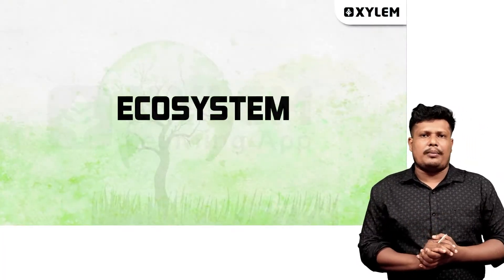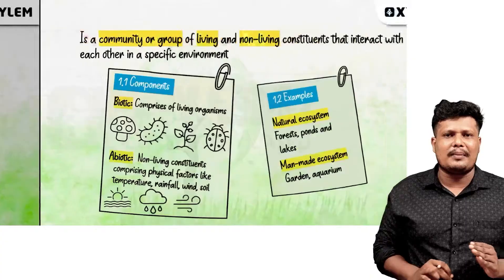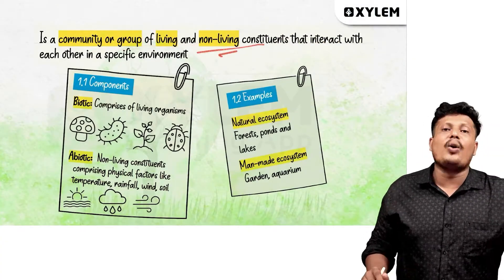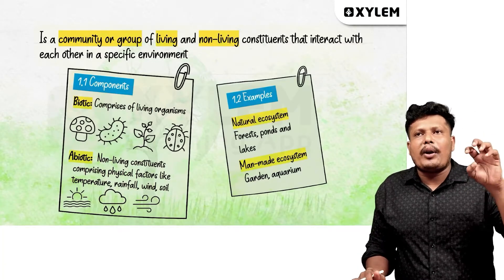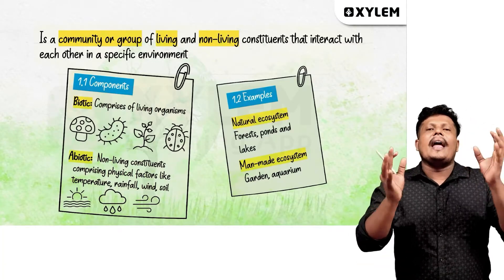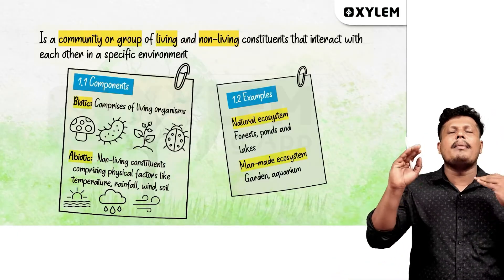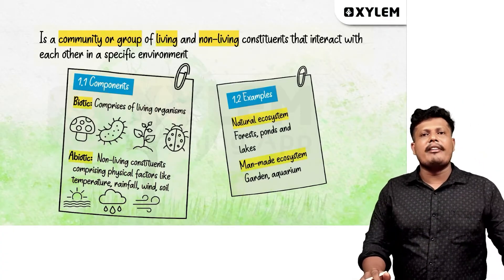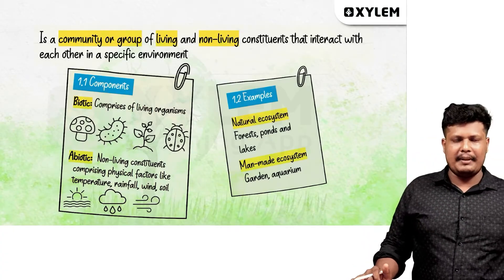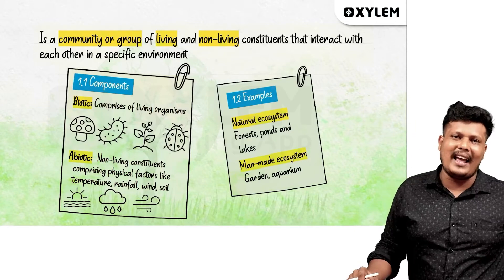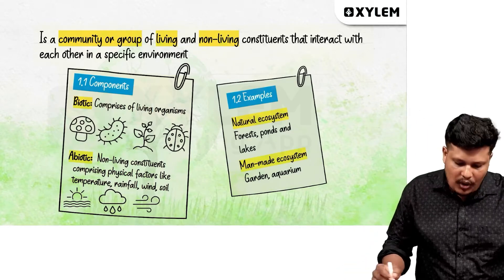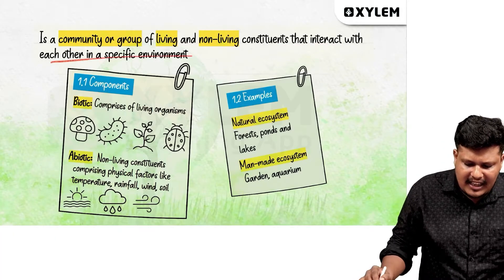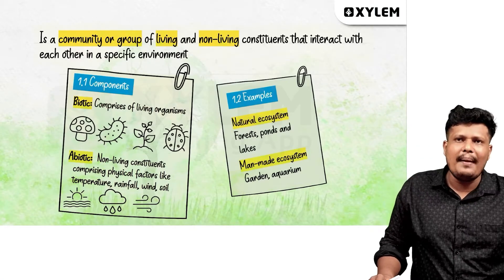What is the ecosystem? We are learning about the environment, so what is the ecosystem? It is a community or group of living and non-living constituents that interact with each other in a specific environment.